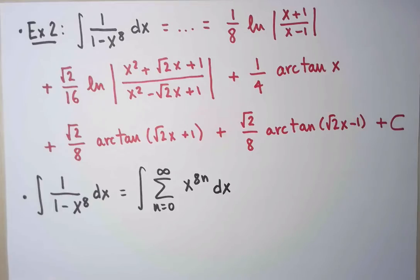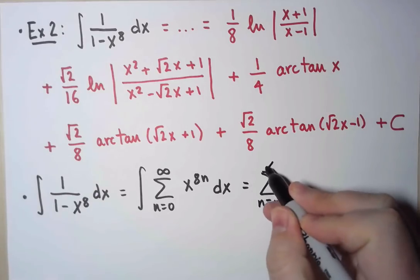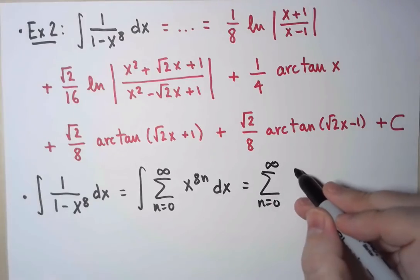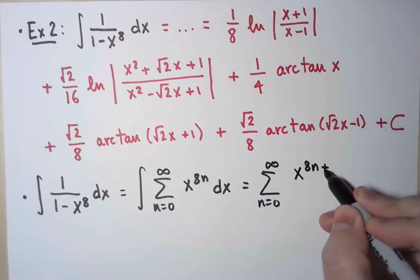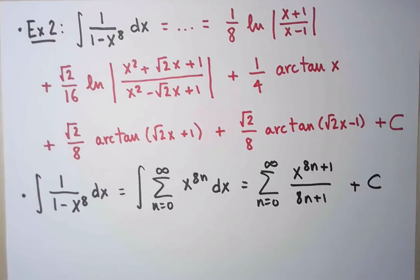And then I know exactly how to integrate that. There is nothing easier to integrate than a power. That would be x to the 8n plus 1 over 8n plus 1, of course, plus an integration constant.